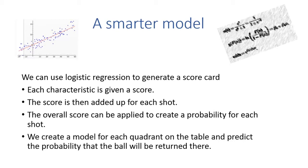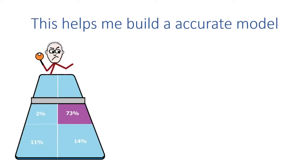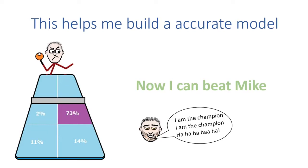I use a technique called logistic regression to generate a scorecard. Each characteristic is given a score, and the score is then added up for each shot. The overall score is then applied to create a probability for each shot, and we create a model for each quadrant on the table so we can predict the probability that the ball will be returned there. This particular shot, I would be able to accurately tell 73% of the time that Mike's going to drop the ball short and place it onto the right-hand side of the court. I can now beat Mike — I get the bragging rights.